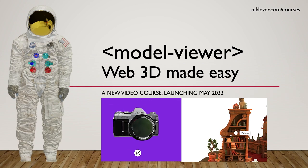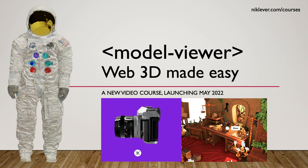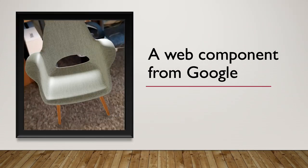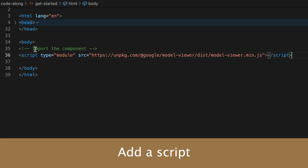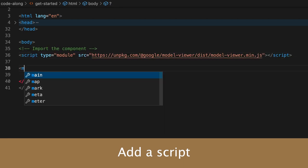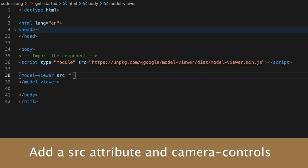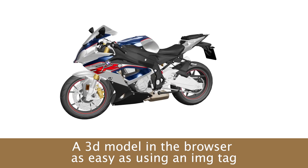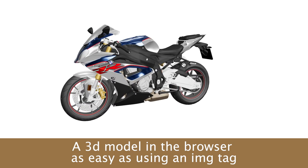If you want to display 3D models in a browser, then you need to look no further than Model Viewer, an amazing web component from Google. A single script added to your page brings with it a new HTML tag. Add an SRC attribute and camera controls and you have a 3D model displayed on your web page as easily as using the IMG tag.